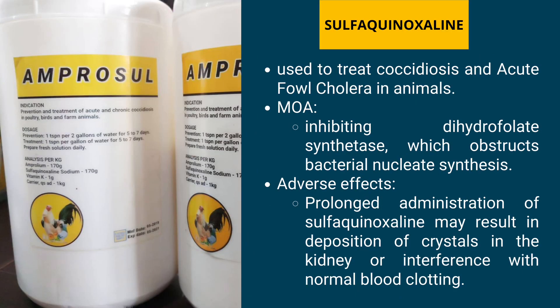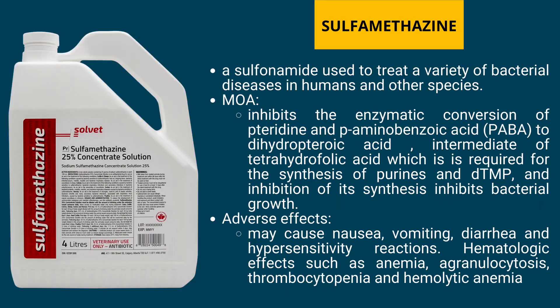Sulfaquinoxaline is used to treat coccidiosis and acute fowl cholera in animals. Its mode of action involves inhibiting dihydropteroate synthetase, which obstructs bacterial nucleotide synthesis. Adverse effects include: prolonged administration of sulfaquinoxaline may result in deposition of crystals in the kidney or interference with normal blood clotting.